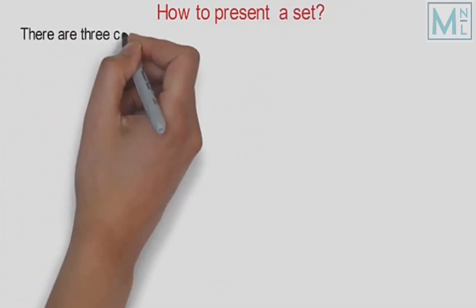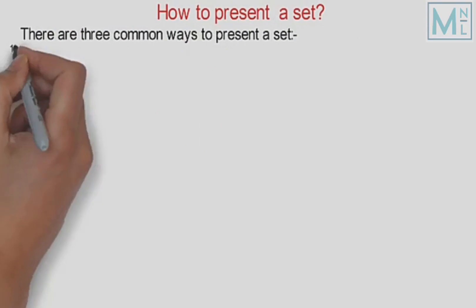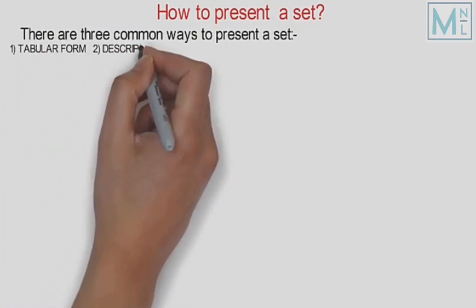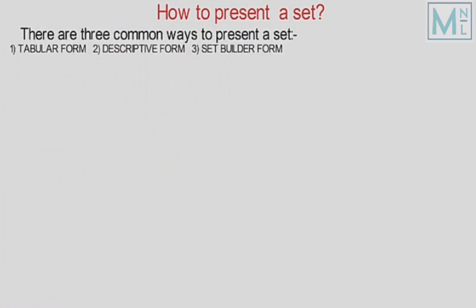There are three common ways to present a set: number one, tabular form; number two, descriptive form; number three, set-builder form.